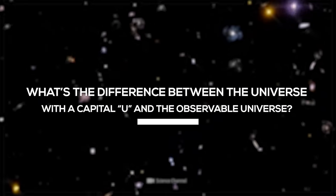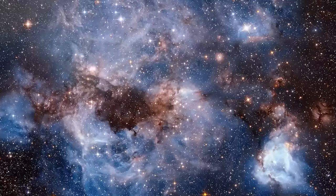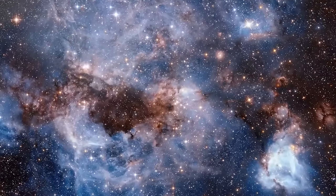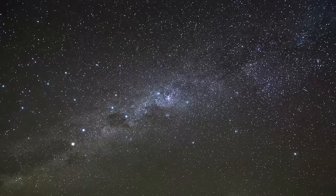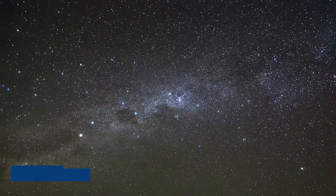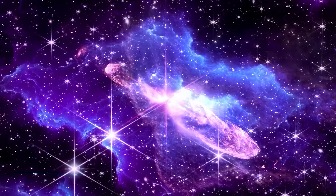So what's the difference between the universe with a capital U and the observable universe? In simple terms, the observable universe is just a small fraction of the entire universe that we can study and comprehend, while the complete size and shape of the entire universe are unknown. There is an estimated diameter of the observable universe which is around 93 billion light years.